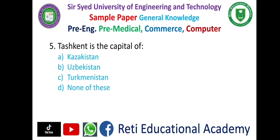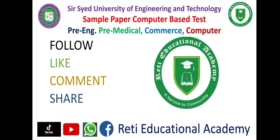Question number 5: Tashkent is the capital of — A. Kazakhstan, B. Uzbekistan, C. Turkmenistan, D. None of these. The correct answer is B: Uzbekistan. Subscribe to Rati Educational Academy YouTube channel and follow us on TikTok, Facebook, and WhatsApp.